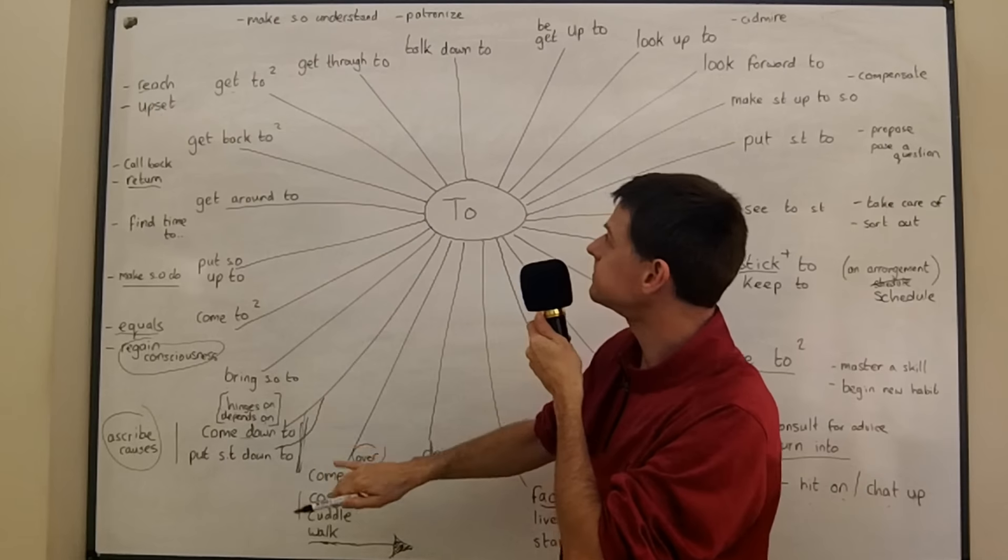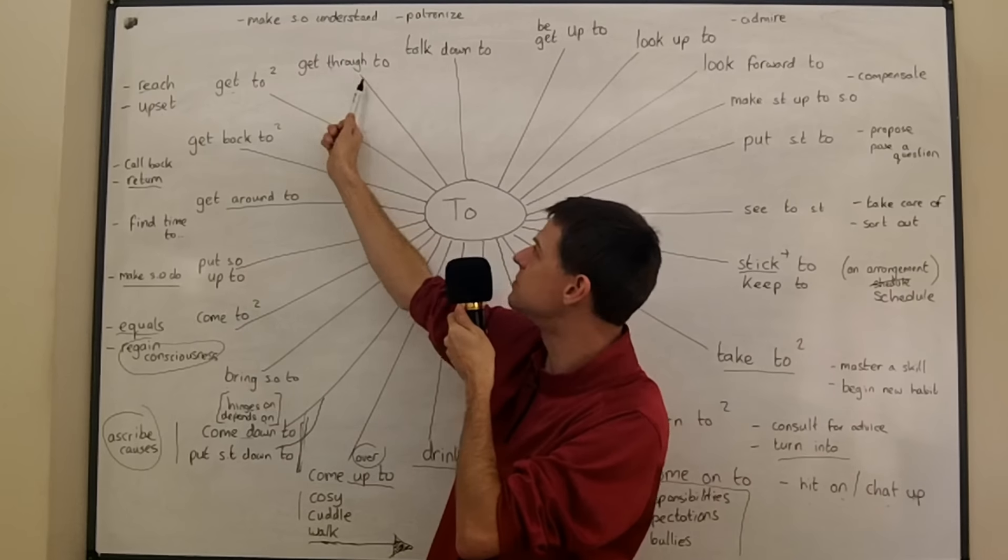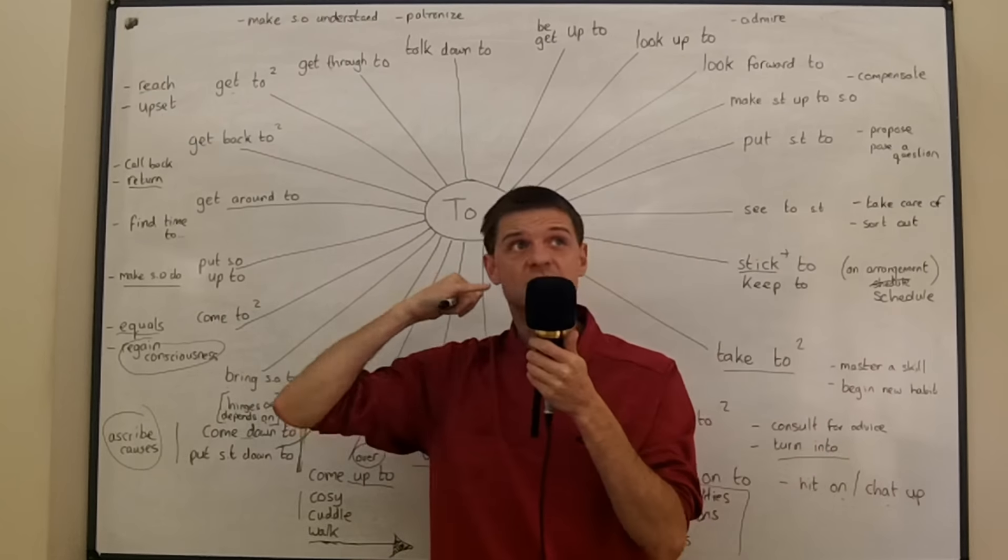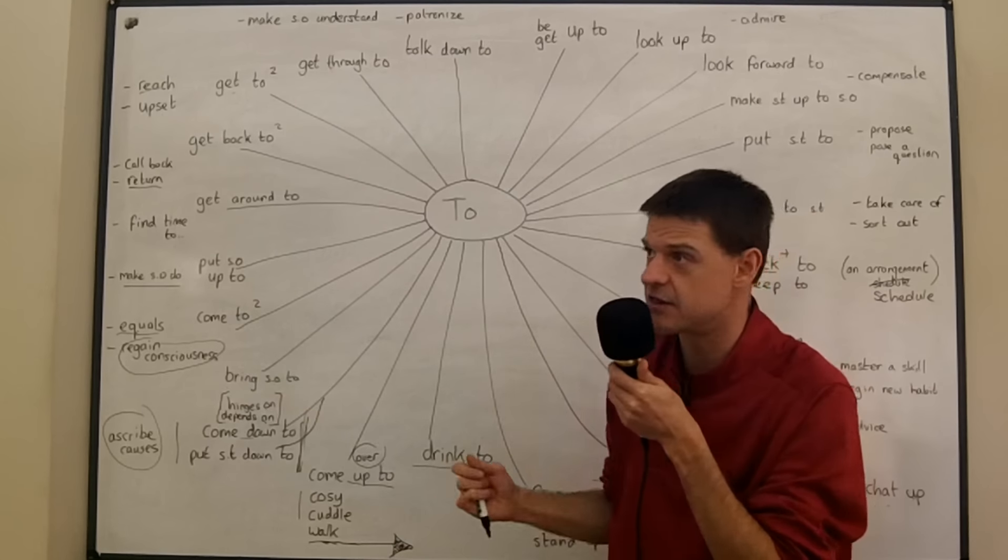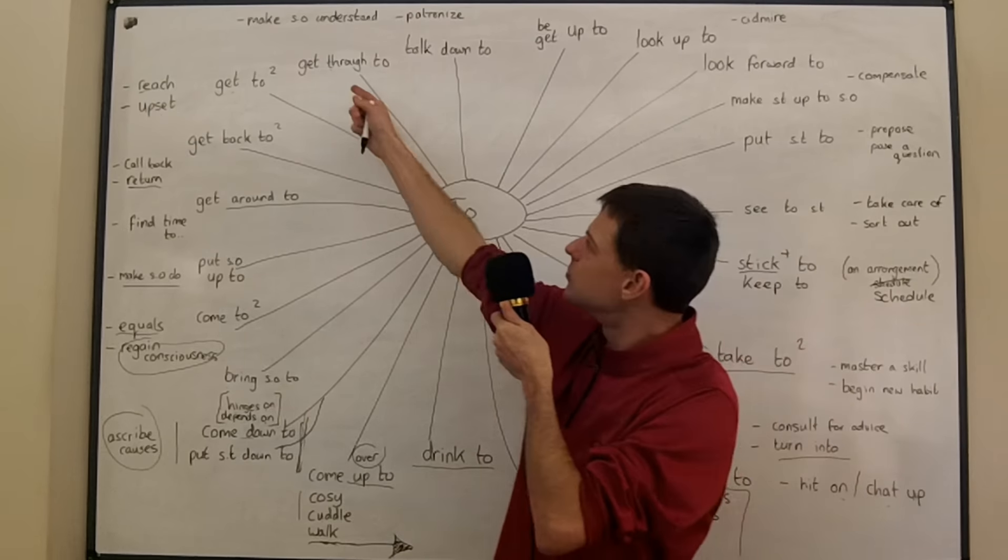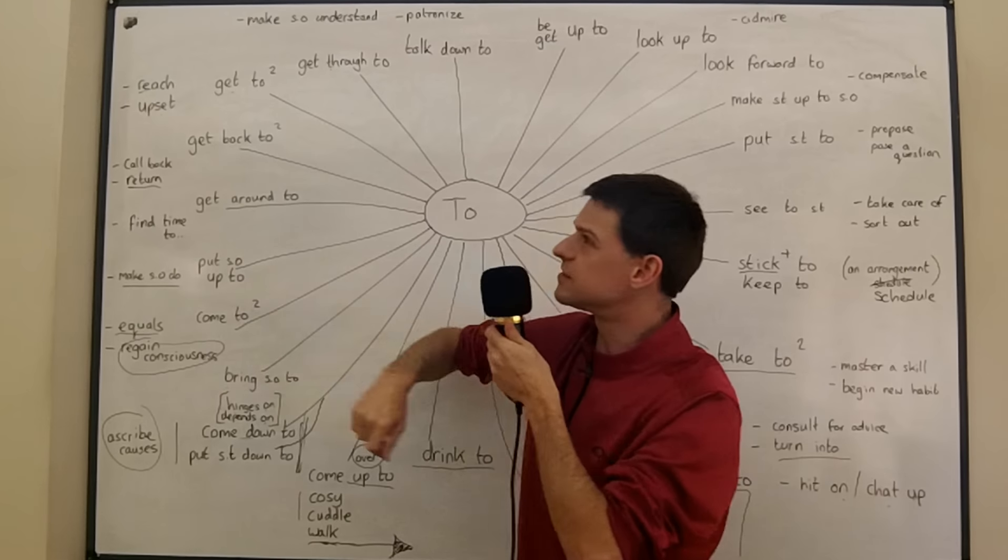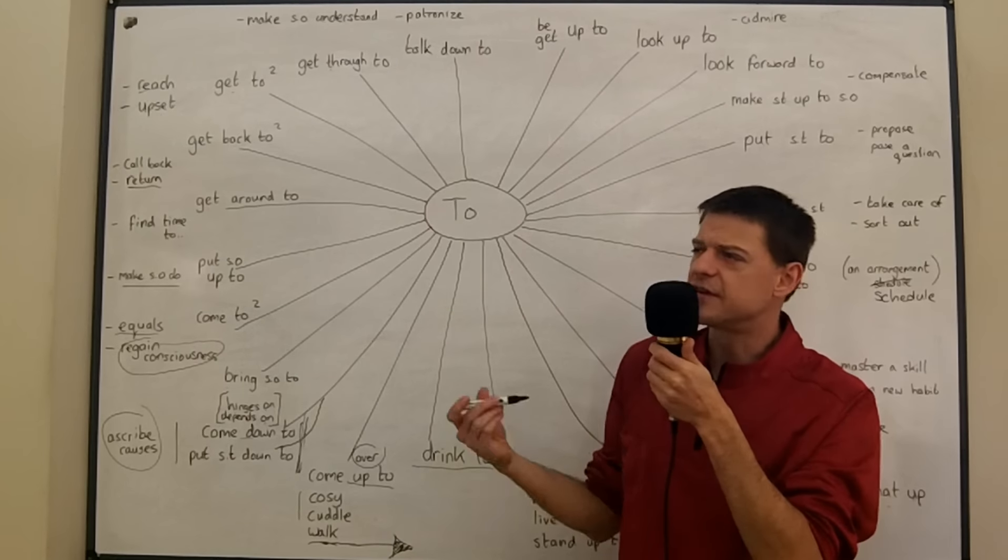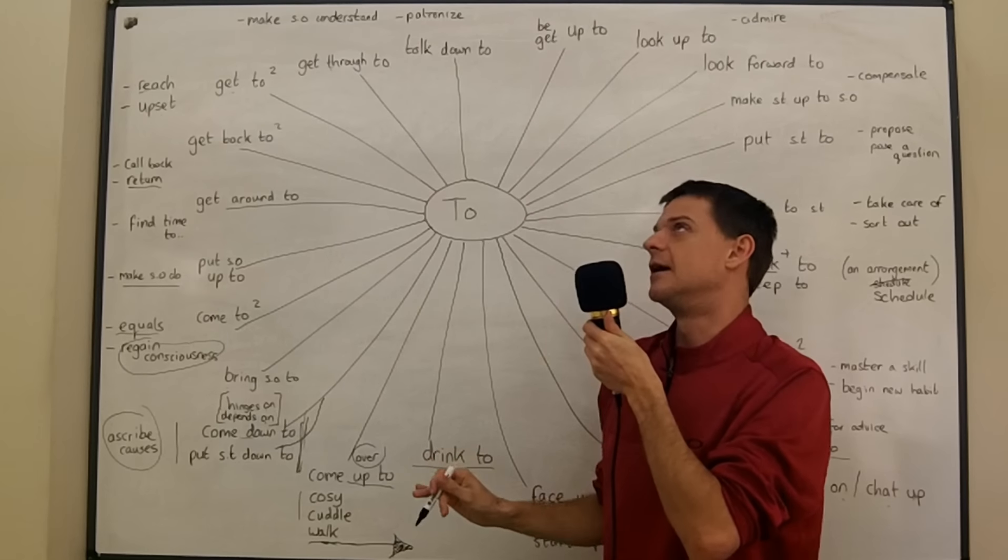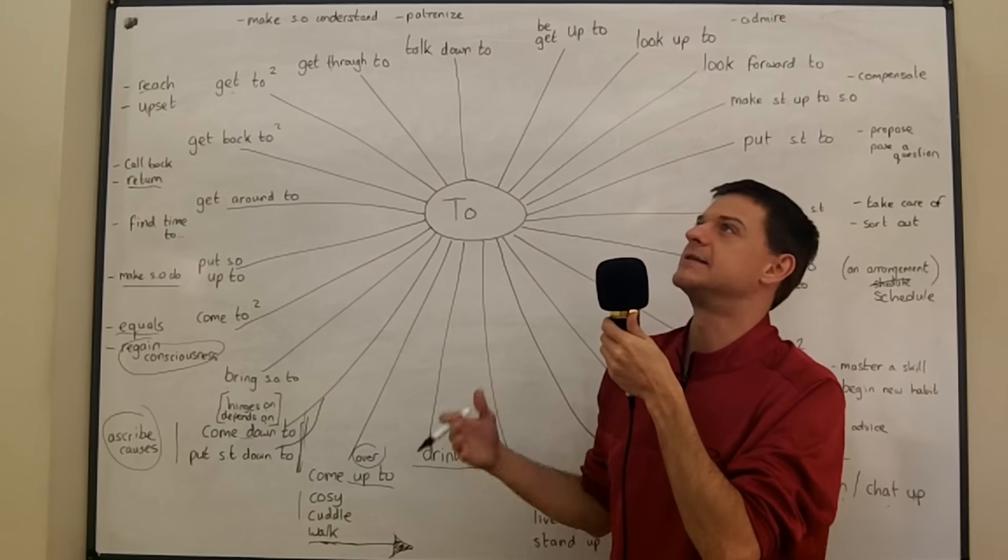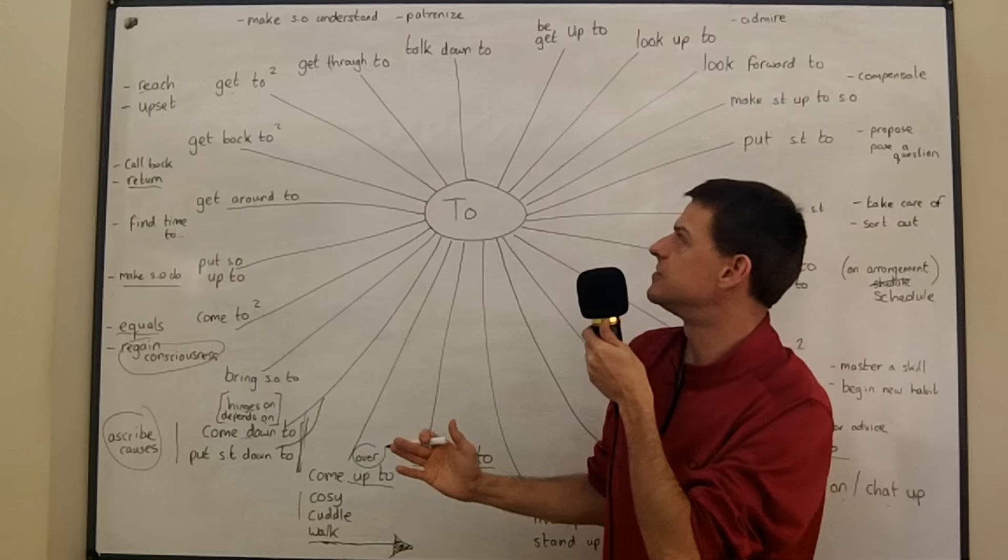If you get through to someone maybe you just reach them in the sense of by phone, you've been trying to call them all day and eventually you get through to them. But it can also mean to make someone understand something, very often something emotional. You might say I've been trying to explain to my son that he shouldn't do this but it's so hard to get through to him. It's so hard to make him understand.